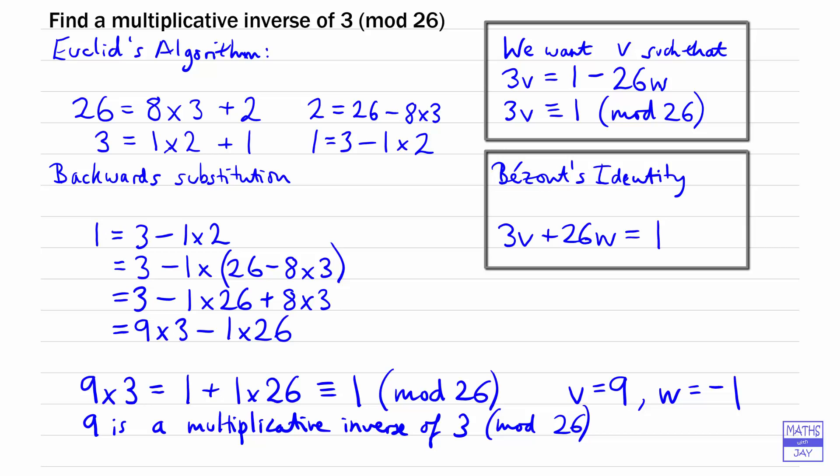You could add 26 to 9 and get 35, so 35 is also a multiplicative inverse of 3, but simplest to stick with a number between 0 and 25. Now you can use this in any other work you're doing, and in fact, we want to use this in decrypting the code we looked at last time.